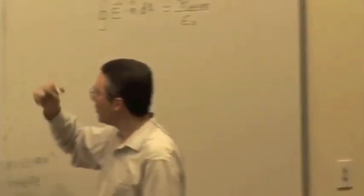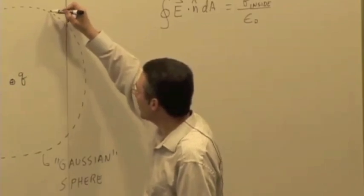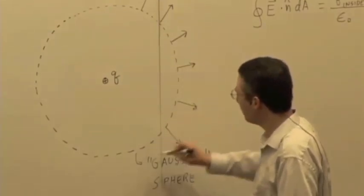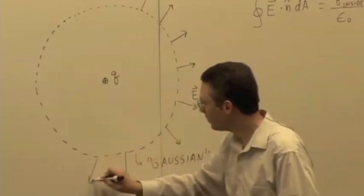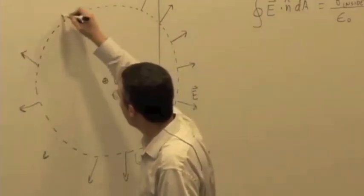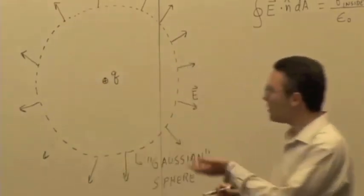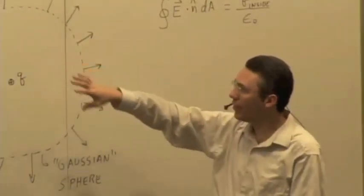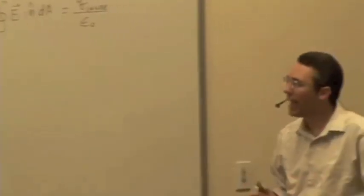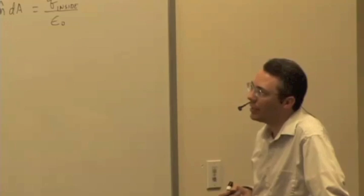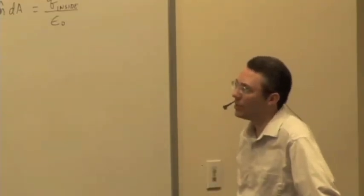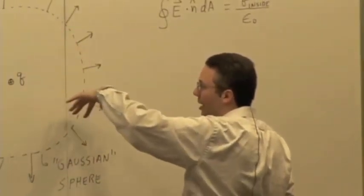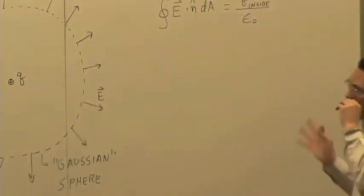So everywhere over the surface of this sphere, the electric field has got to look the same — it's got to be pointing radially outward. And it has to have a uniform magnitude across the surface of that sphere, because if it didn't, if some side had a smaller magnitude than another, it wouldn't have spherical symmetry. So even without doing any calculations at all, purely from the symmetry, we could reason that the electric field has to be uniform over the spherical surface, pointing radially outward since the charge is positive.